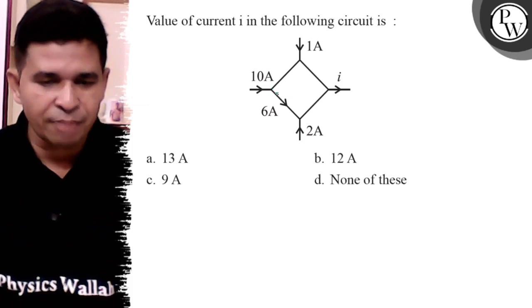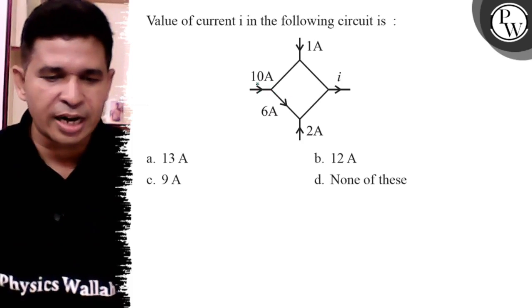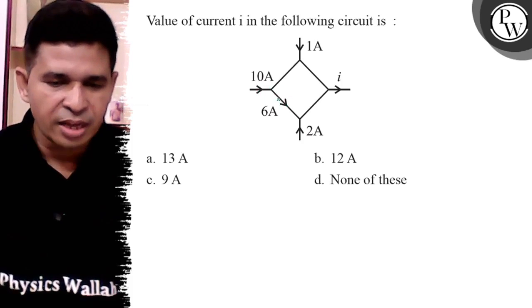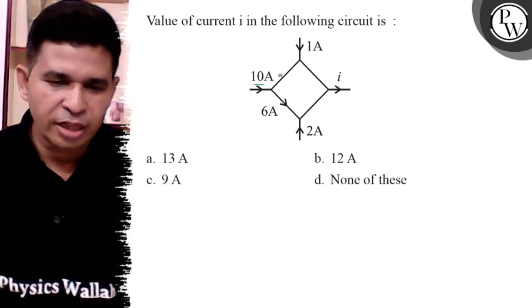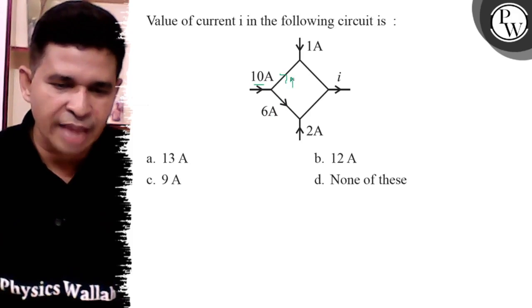Each and every junction follows Kirchhoff's law: incoming current equals outgoing current. 10 ampere is coming from that part, and 6 ampere is going in that direction. So 4 ampere is going in that branch.